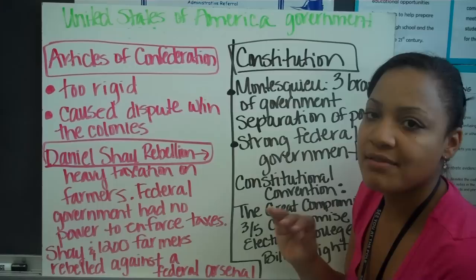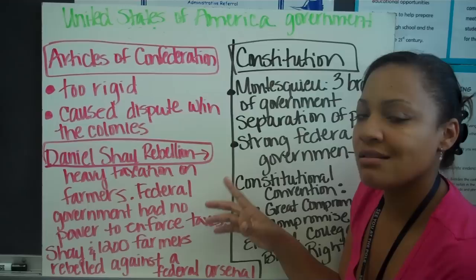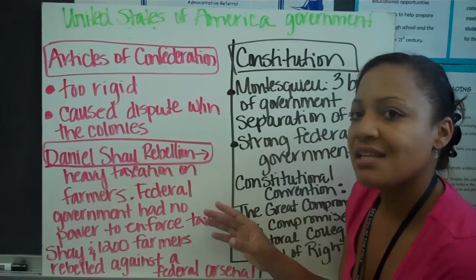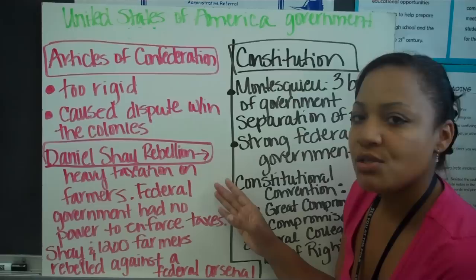Each colony had its own type of currency — they didn't have the same money. Most of the power in the Articles of Confederation remained in the states. Each state was doing its own different thing, and the federal government had basically no power to do anything.